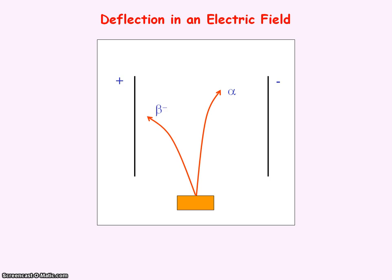Whereas the beta minus particle was deflected strongly towards the positive plate, indicating the negative charge of the beta particle.